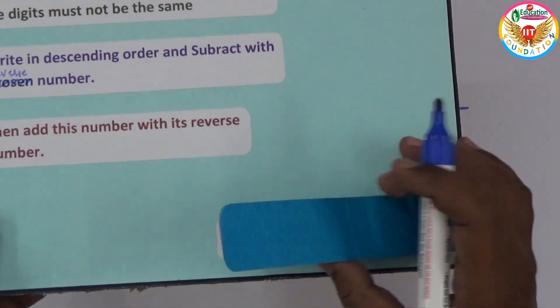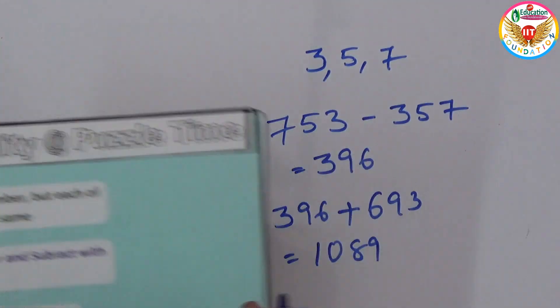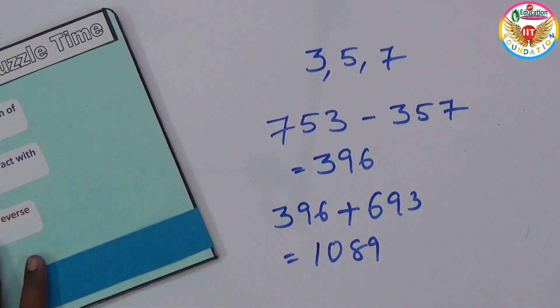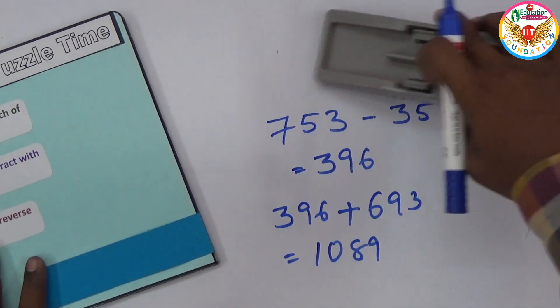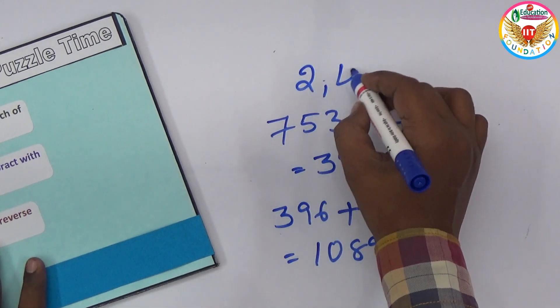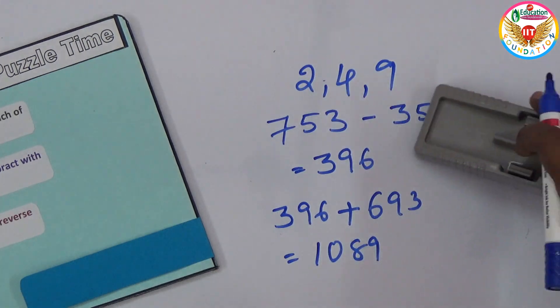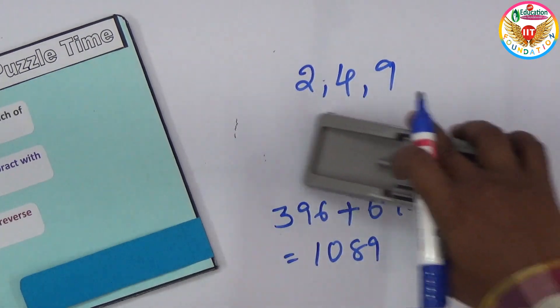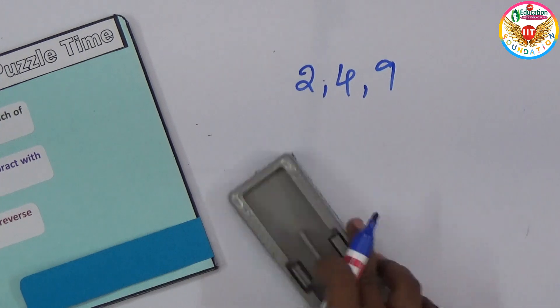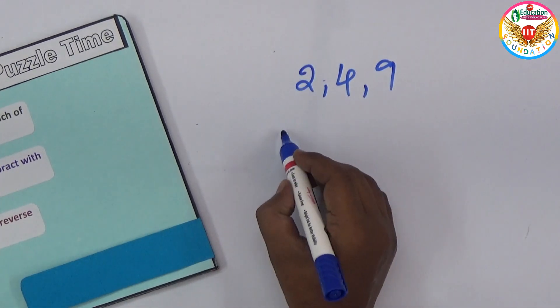You can see the answer is 1089. Let's take some other numbers instead of this. In place of 357, let me take 249 - any three-digit number. Using 249, we need to make the number in descending order. Using all three digits in descending order is 942.